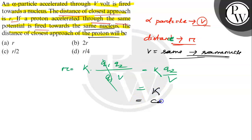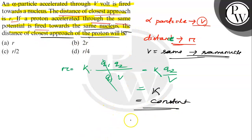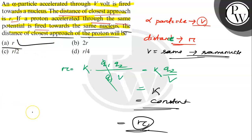So R is equal to a constant. Therefore the distance of closest approach of the proton will also be equal to R. This is constant for every particle. So the correct answer for this question is option A, that is equal to R. I hope you understood, best of luck.